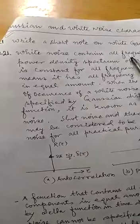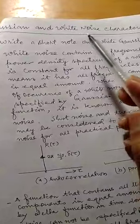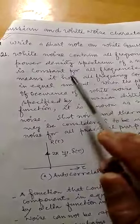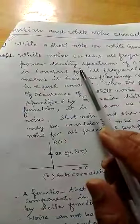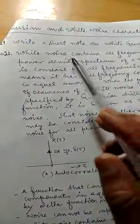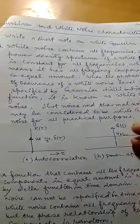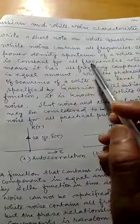We are going to see the white Gaussian noise, so why we say white and why we say Gaussian. Let us see first. White noise contains all frequencies. The power density spectrum of a white noise...